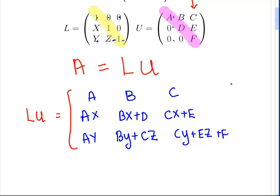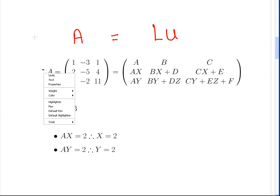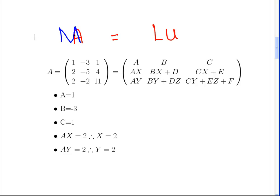So there's a good bit of work there. I can't think of any mnemonics for a quick way of remembering it, other than the top row is A, B, C — you just have to work it out. Now, we're letting A equal LU and matching the coefficients. I've called my matrix A, but I'm also using A as a coefficient, so I'm going to change the name of the matrix to M just to avoid confusion.